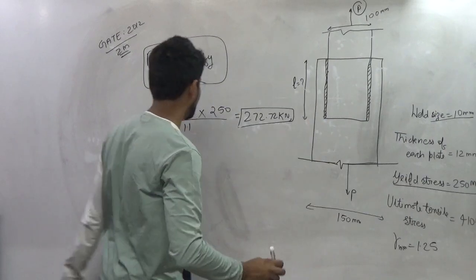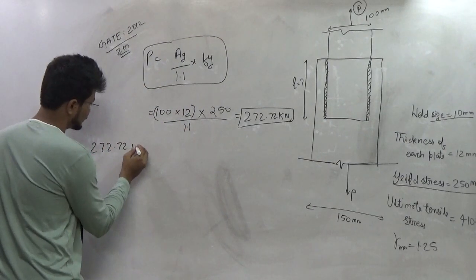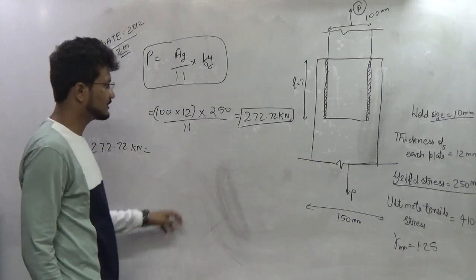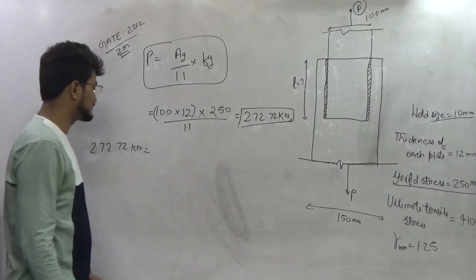So this much load has to be taken into account by the fillet weld also. So 272.72 kN will be equal to the resistance of this particular weld is given by